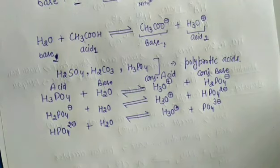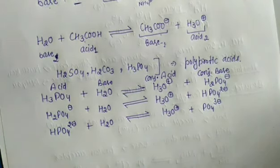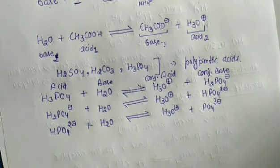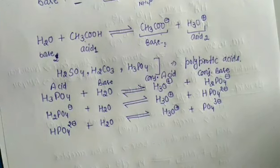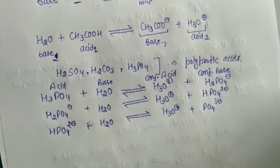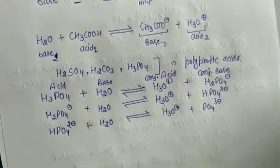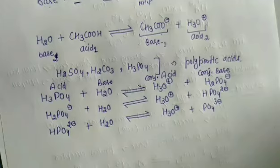The next concept is relative strength — determining which is the stronger acid, the weaker acid, the stronger conjugate acid, and the weaker conjugate base. This topic will be covered in our next lecture.